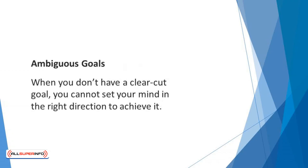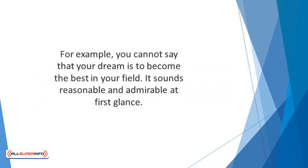Ambiguous goals. When you don't have a clear-cut goal, you cannot set your mind in the right direction to achieve it. You shouldn't set targets that are hazy because they will become unrealistic and unattainable in the long run. For example, you cannot say that your dream is to become the best in your field.